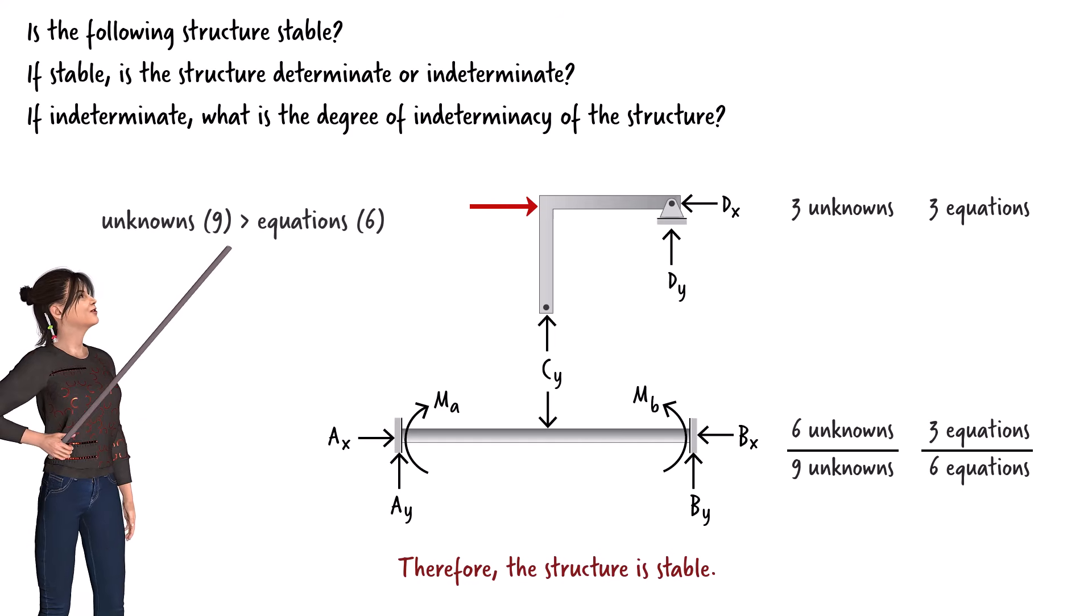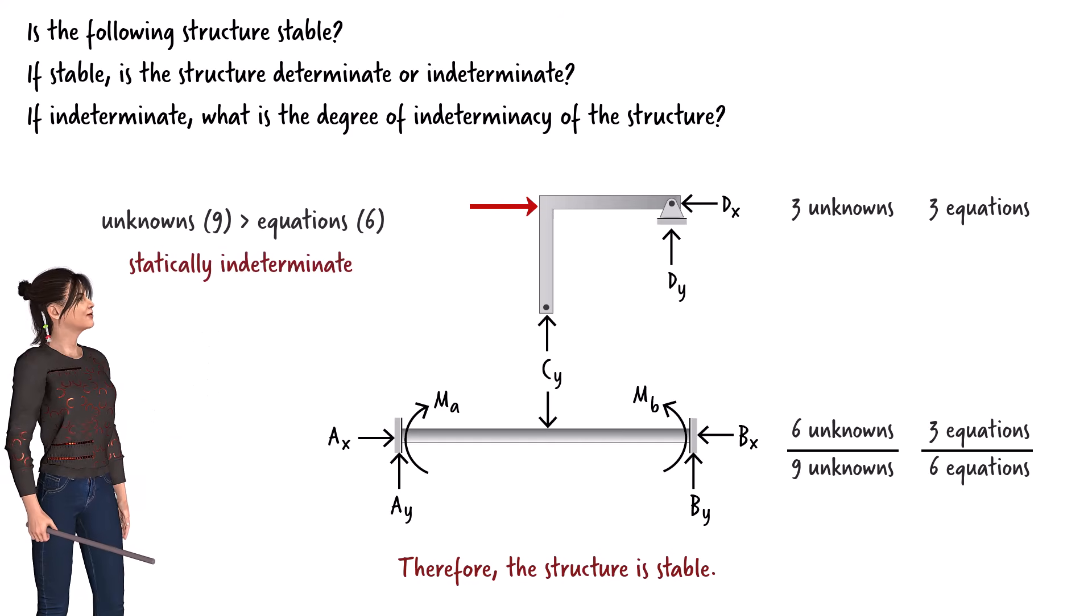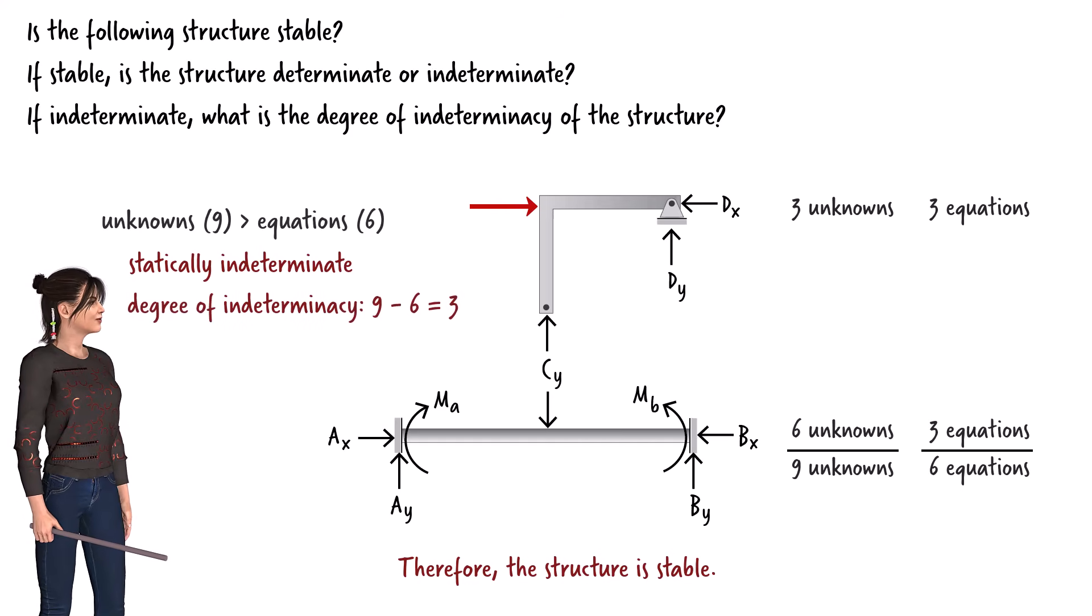Since the number of unknowns is greater than the number of equations, the structure is statically indeterminate. This means we cannot determine all the unknown forces using the available equations. The degree of indeterminacy of the system is the difference between the number of unknowns and equations. Therefore, our structure is indeterminate to the third degree.